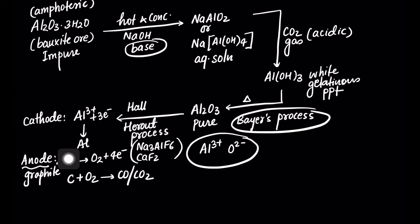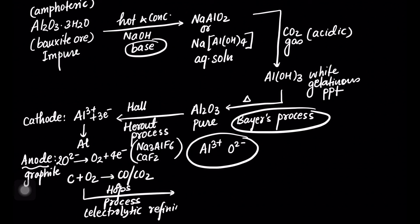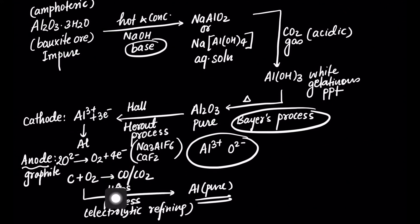Then we have the Hoopes process, which is basically electrolytic refining, and it produces pure aluminium. In summary: Bayer's process produces pure alumina (Al2O3), the Hall-Héroult process produces aluminium metal, and the Hoopes process produces pure aluminium. That's all, thank you.